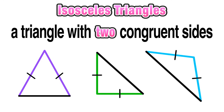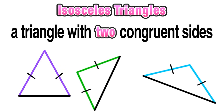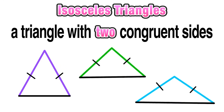Let's take this a step further. We're going to spin around those two triangles so that all three of the isosceles triangles are facing the same way, with the congruent sides in the same spot.